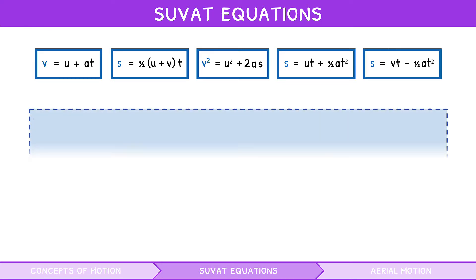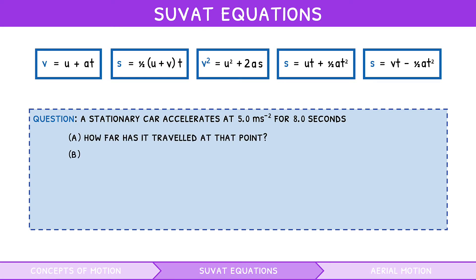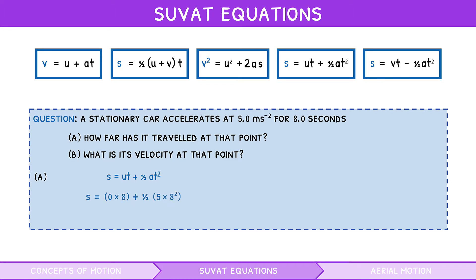Let's take a look at an example question. A stationary car accelerates at 5 metres per second squared for 8 seconds. A: how far has it travelled at that point? B: what is its velocity at that point? We know the initial velocity is 0 metres per second, the acceleration is 5 metres per second squared, and the time is 8 seconds. For A, using displacement equals initial velocity times time plus a half times acceleration times time squared, the displacement is 160 metres. For B, using final velocity equals initial velocity plus acceleration times time, the velocity is 40 metres per second.